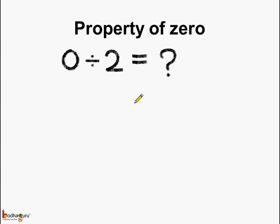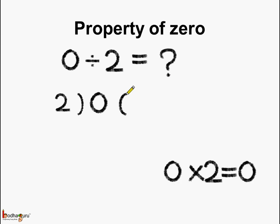We can also prove it mathematically. Let us divide 0 by 2. So 0 times 2 equals 0. So 0, 2 zeros are 0, then 0 minus 0 equals 0. So we see if 0 is divided by any number, we get the answer as 0 only.